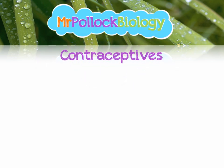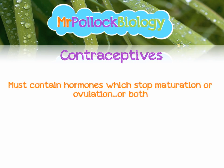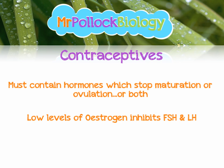Contraceptives work by manipulating the menstrual cycle through knowledge of hormone interactions. They must contain hormones that stop follicle maturation, ovulation, or both. Hormone pills, implants, or similar contraceptives probably contain oestrogen, which inhibits FSH and LH — so no FSH means no mature follicle, and no LH means no ovulation. Similarly, some contain progesterone, which also inhibits FSH and LH, again preventing follicle maturation and ovulation.